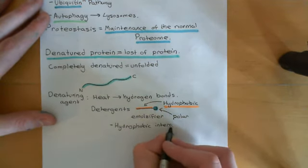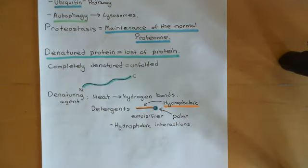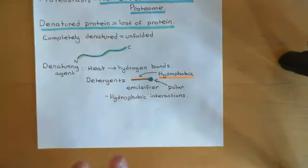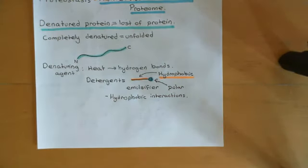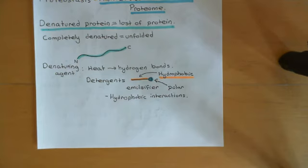Previously, when the protein wasn't in the presence of a detergent, the hydrophobic residues had to be hidden deep within the protein so they weren't on the surface and couldn't interact with water. In the presence of the detergent, that's no longer necessary — the hydrophobic residues can be on the surface because they can just bind to a detergent molecule, which then binds to water. This interrupts hydrophobic interactions and causes the protein to change its conformation and misfold.